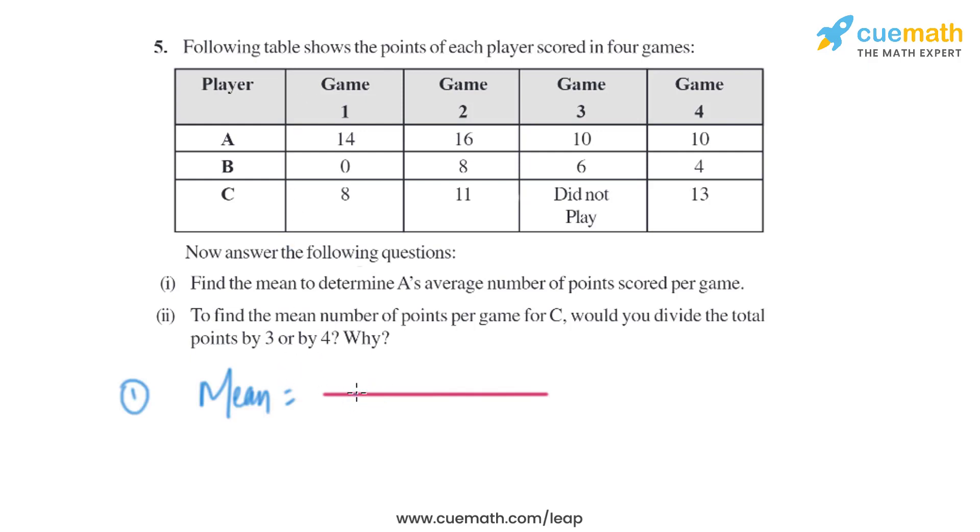In the first part we have to find the mean. Let's find the mean of A. That is the sum of terms: 14 plus 16 plus 10 plus 10, divided by the number of terms. As we can see there are four terms, so when you add them together you will get 50 divided by 4. On solving that we will get 12.5.